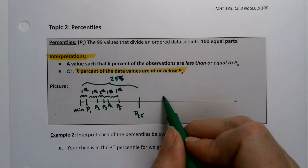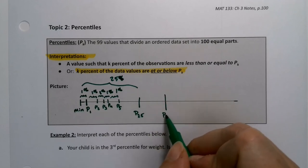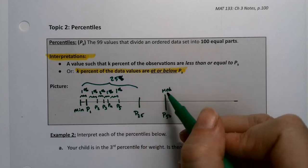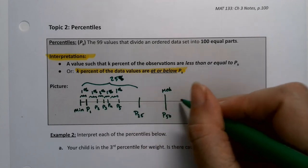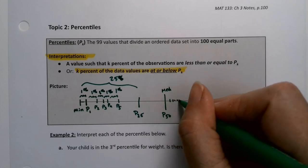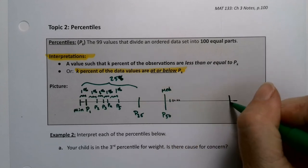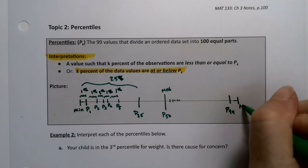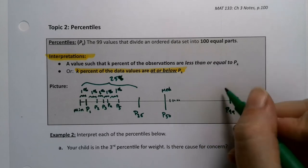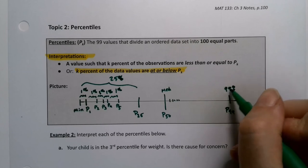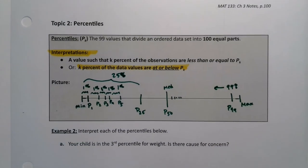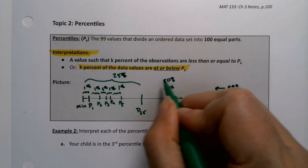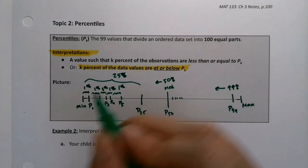Or P sub 50 — that's the median — which would have 50% below it. And then you keep going: 51, 52, they're all in there. And then you end up at P99, which has 99% of the data below it. And then you have the max. So P99 has 99% at or below that value, and the median has 50% at or below that value.